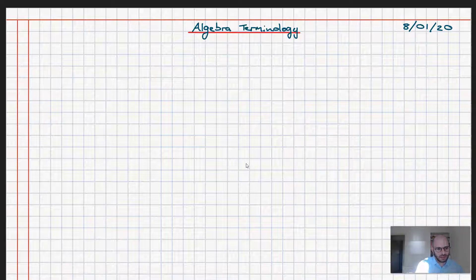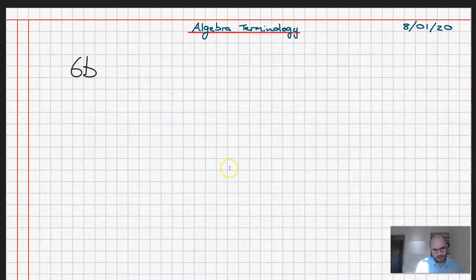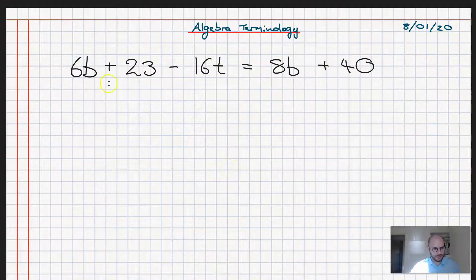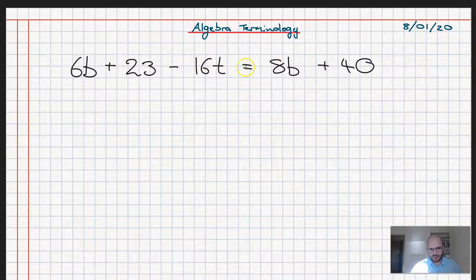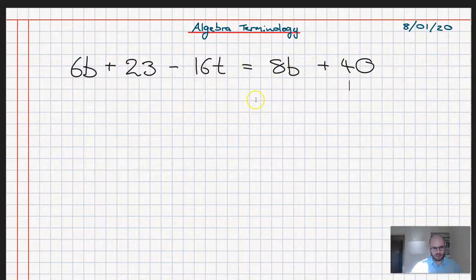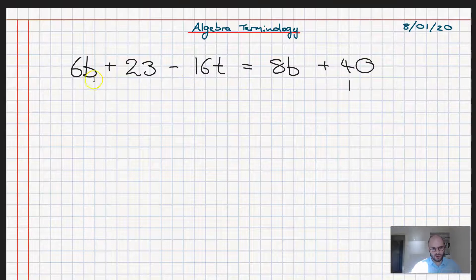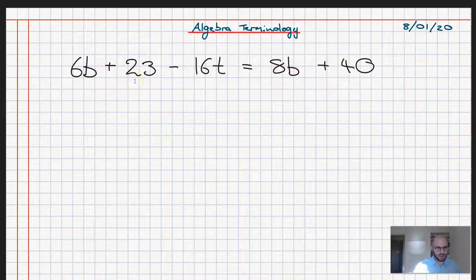So consider we have an algebraic equation defined as 6b plus 23 minus 16t equals 8b plus 40. Now what we have here is called an algebraic equation or simply we just call it an equation. And the reason this is an equation is because there is an equal sign here.